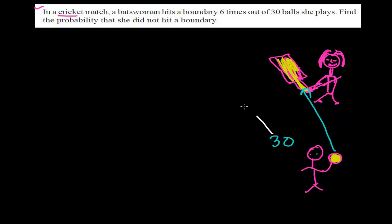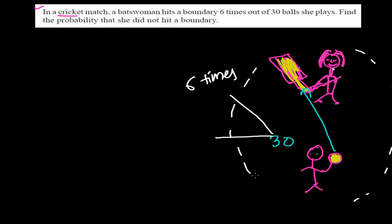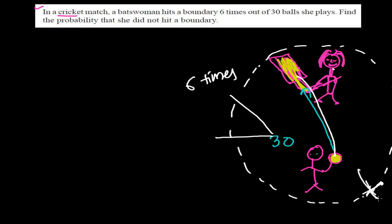Out of these 30 times, six times she hits the boundary. Boundary means cricket is played in a circular type of ground. When the bowler throws it, she hits this ball and it touches the boundary — it may have crossed or just touched, it may be four or six. So it happened six times. She touched this boundary six times, and the rest of the 24 times she doesn't hit the boundary.